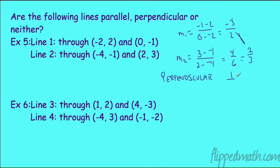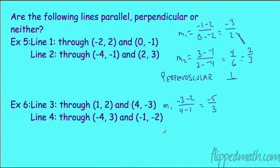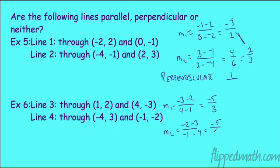Shorthand for perpendicular is an upside-down T. Next example: slope of the first line is negative 3 minus 2 over 4 minus 1, giving negative 5 over 3. Slope of the second line is negative 2 minus 3 over negative 1 minus negative 4, giving negative 5 over 3. They're exactly the same, therefore the lines are parallel — shown by two lines running side by side like train tracks.